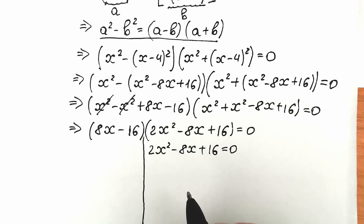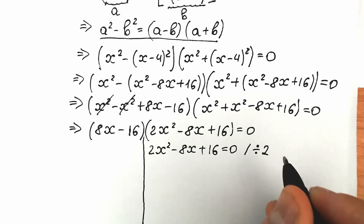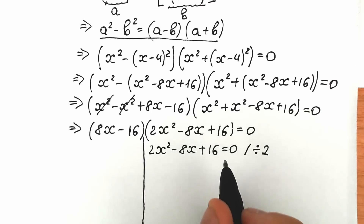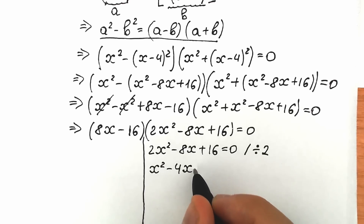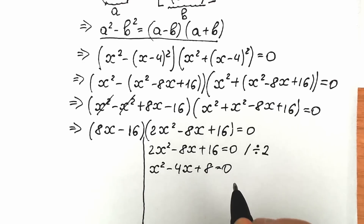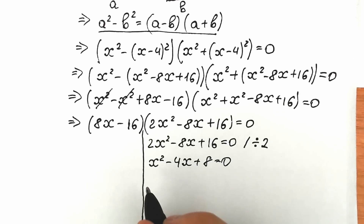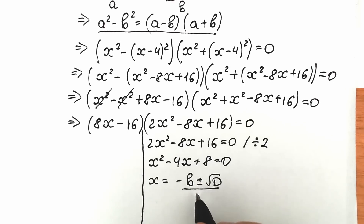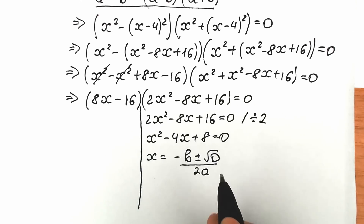This is a quadratic equation. We can divide both sides by 2, since 2, 8, and 16 are all divisible by 2. So we have x squared minus 4x plus 8 equals zero. Right now let's find our discriminant — or we could use the basic formula x equals minus b plus or minus square root of the discriminant over 2a, but I prefer to find the discriminant first.